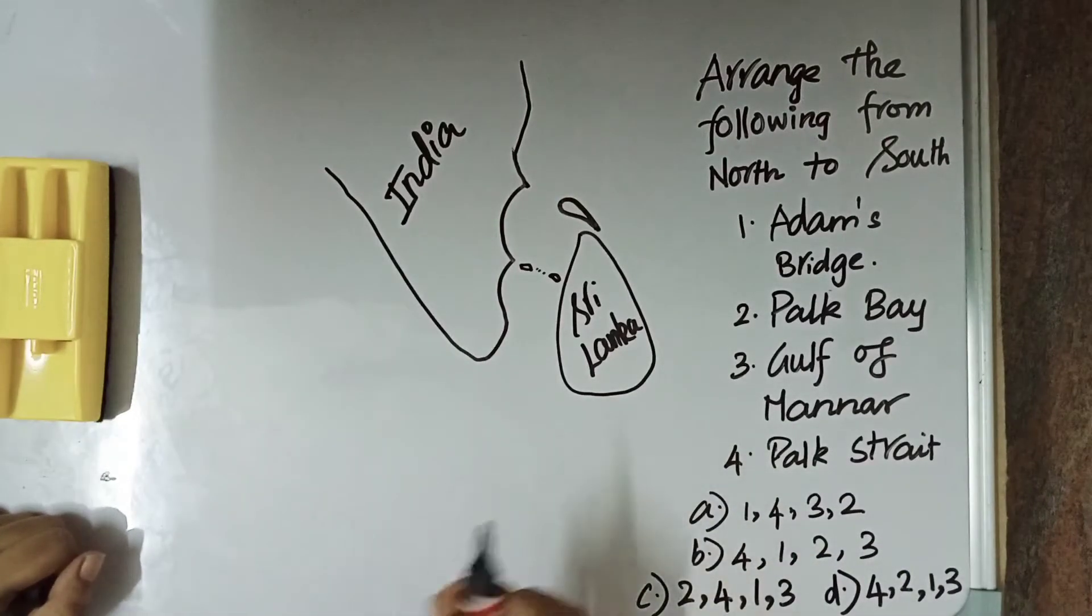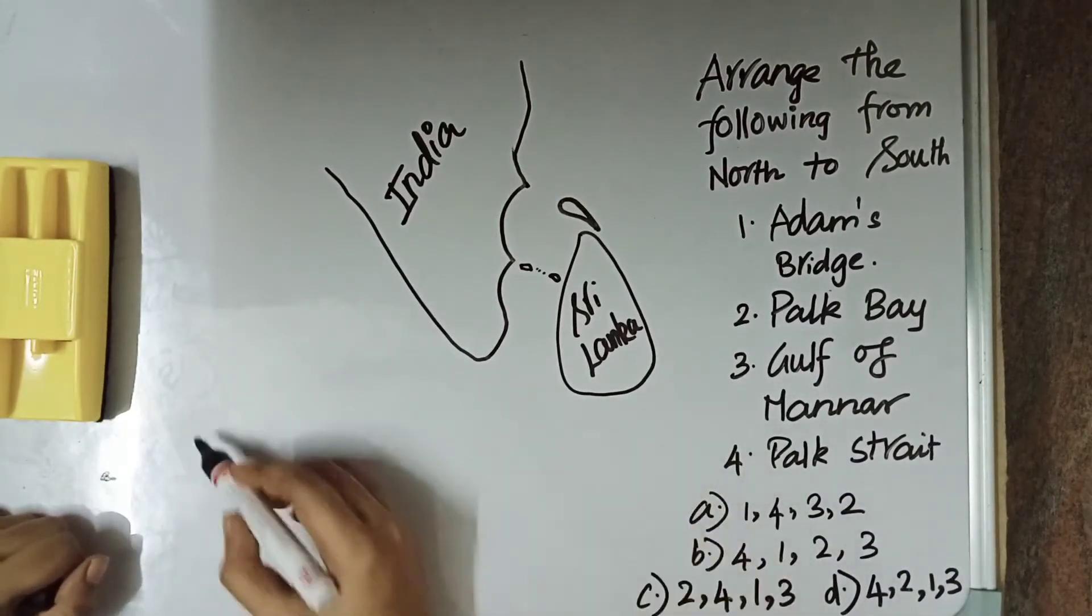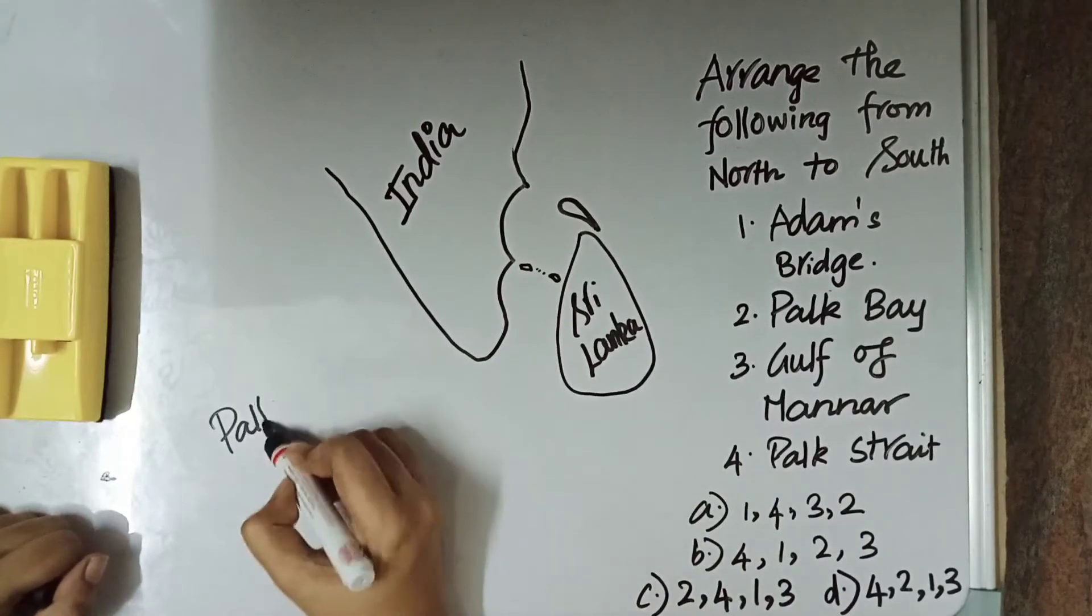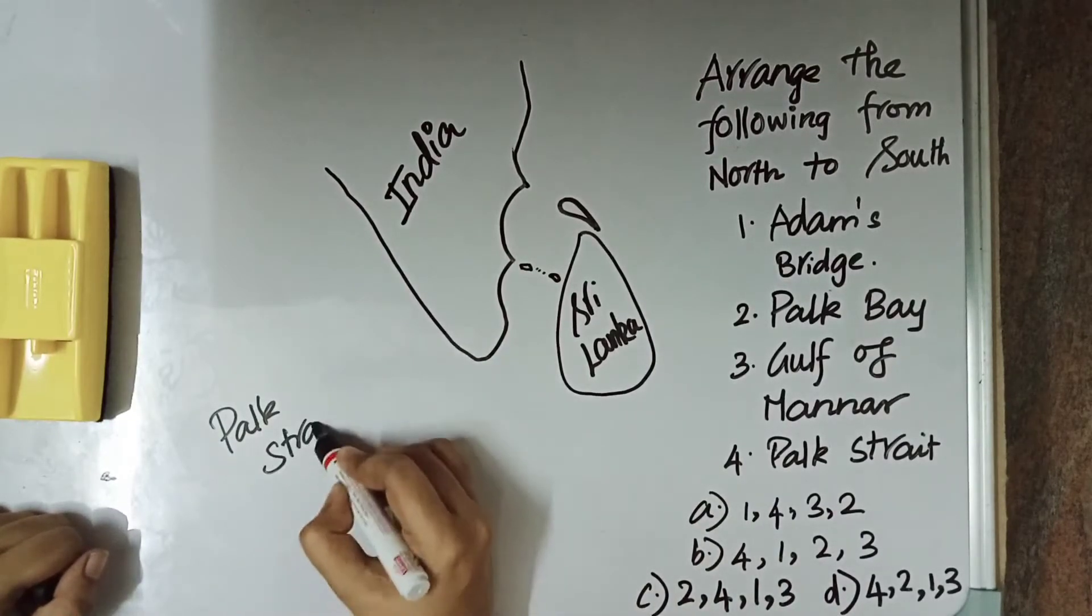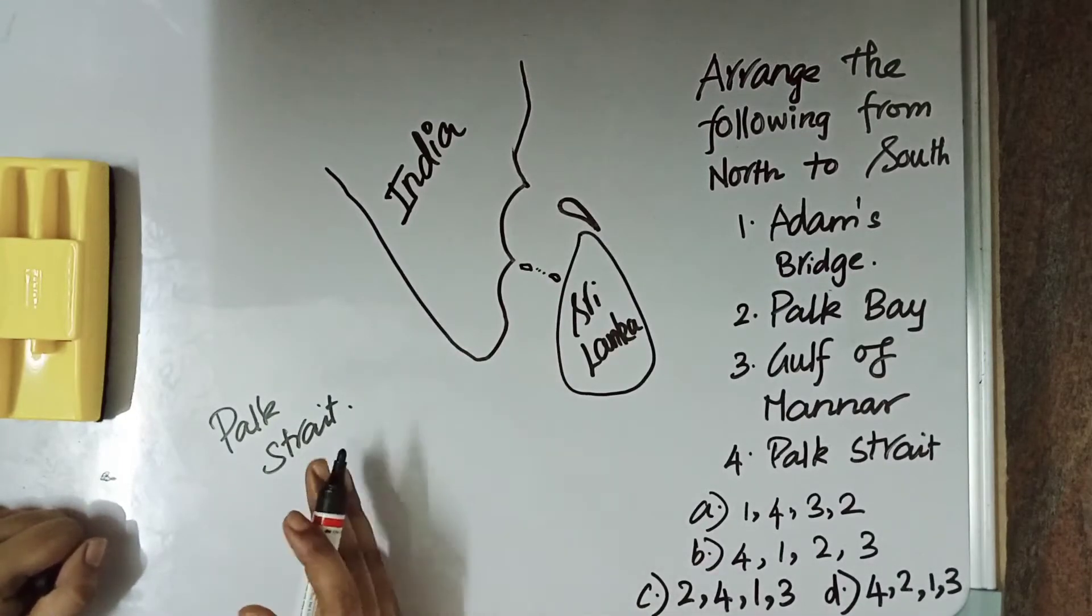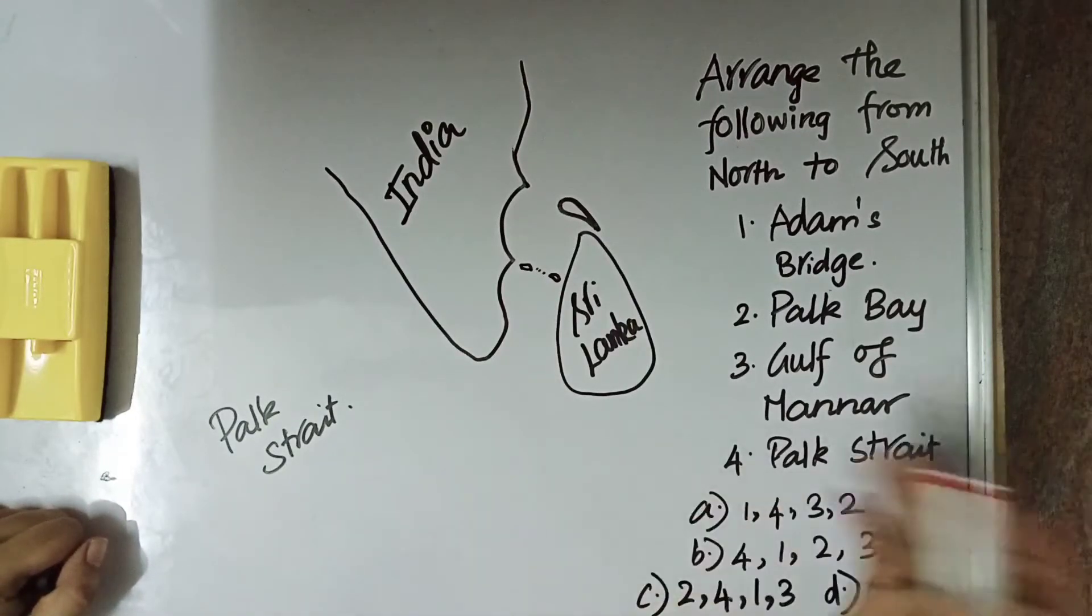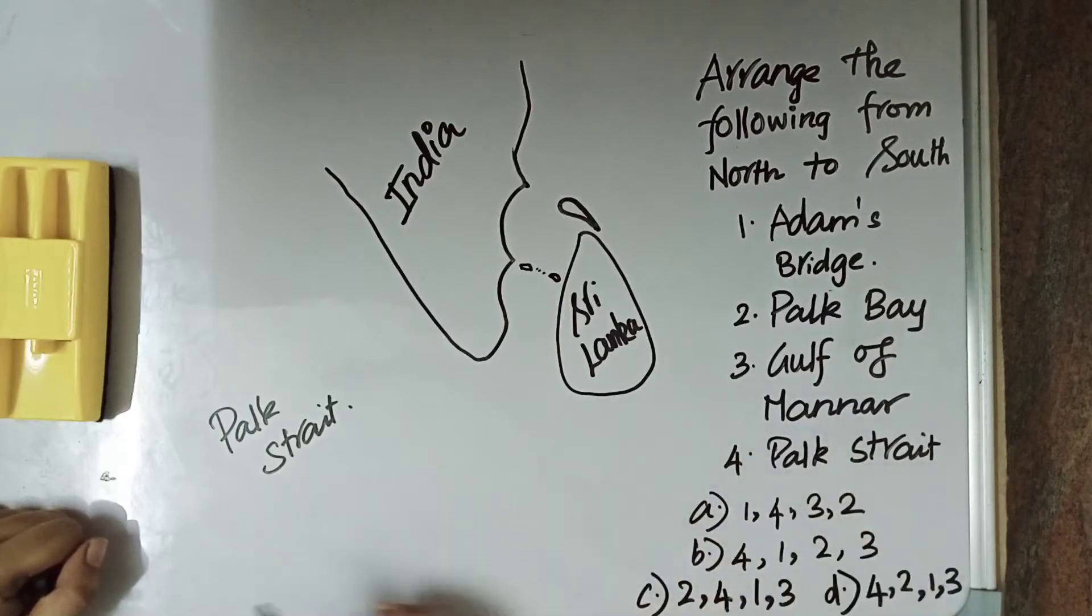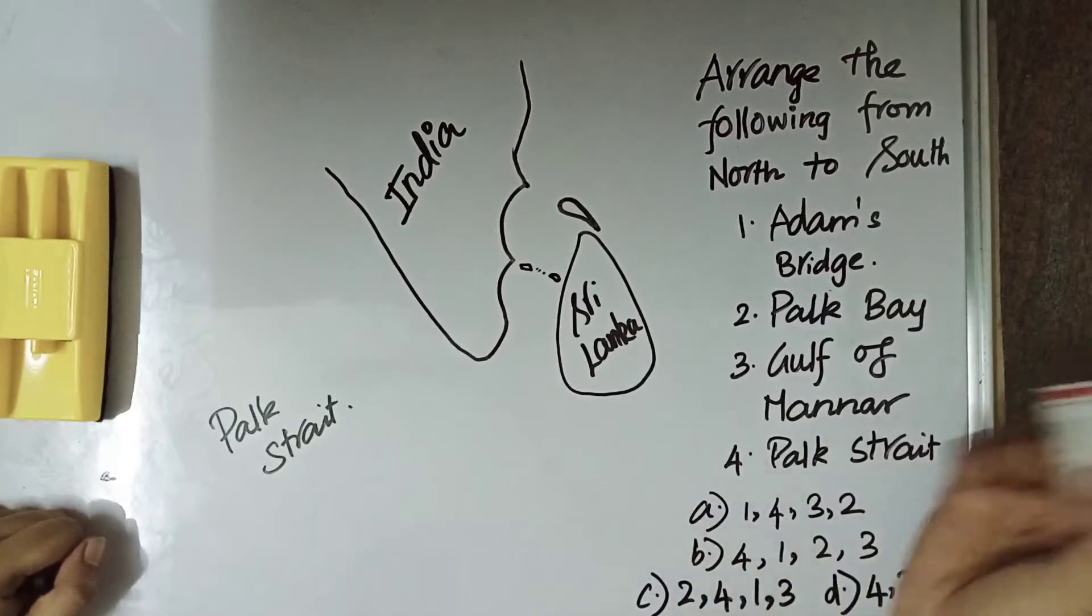So, we have a strait between India and Sri Lanka. We all know that it is Park Strait but most people are not aware of Park Bay and Adams Bridge but it is also important. They might ask a question like arrange the following from north to south.